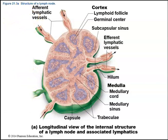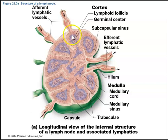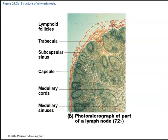Lymph enters the lymph node through afferent lymphatic vessels. The lymph node has different layers: the outermost layer is the cortex, and the innermost layer is the medulla, where you'll see medullary cords and medullary sinuses. In the cortex, you'll see lymphoid follicles and germinal centers, which are important for maturation and storage of lymphocytes that help fight infections.